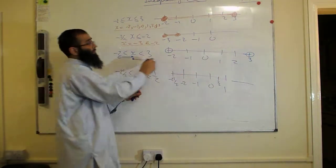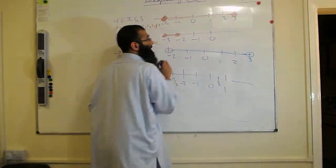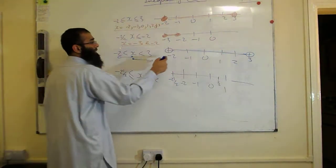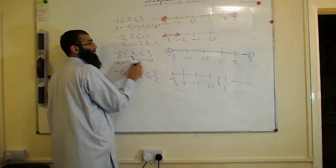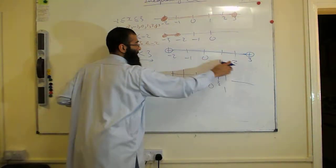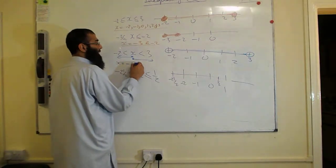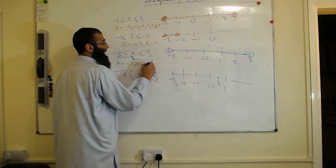So we join these two up. Which numbers remain between these two numbers but don't include those two numbers? So we say X is equal to minus 1, 0, 1, and 2.